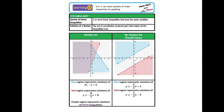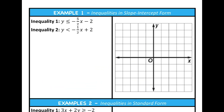Now we're going to look at examples of solving systems of linear inequalities by graphing the system on the same coordinate plane. In this first example, both inequalities are written in slope-intercept form. For the first inequality, y is less than or equal to negative 5/2 x minus 2. The two pieces of information I need are the slope and the y-intercept. The y-intercept is negative 2, which is a good starting point.